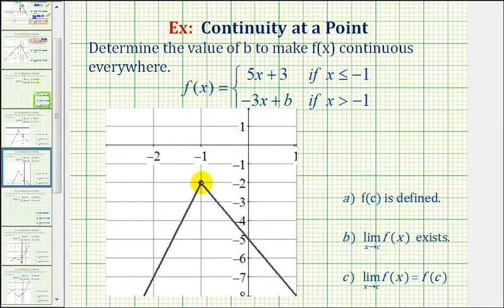So, notice that when x is equal to negative 1, these two functions would be equal to each other, and that's our strategy in order to determine the value of b.